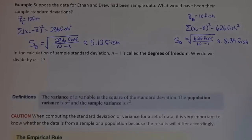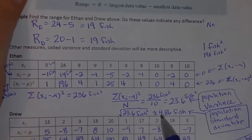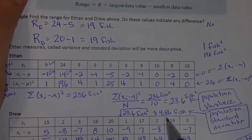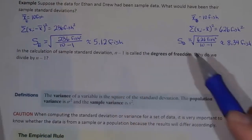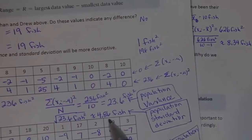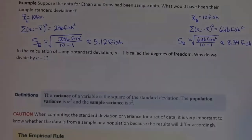Notice that for Ethan, when we calculated by dividing by 10, we got a standard deviation of 4.86. When we calculated by dividing by 10 minus 1, we got a standard deviation of 5.12. 5.12 is a little bit bigger than 4.86. So we have adjusted the standard deviation to be a little bit bigger on purpose. And as a general rule, that makes our estimate of the population standard deviation a little more accurate on the whole.